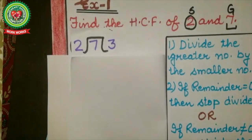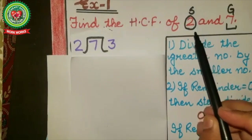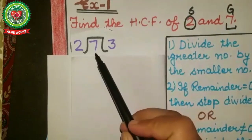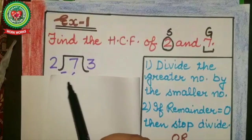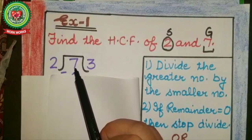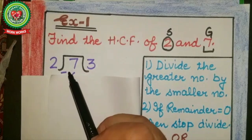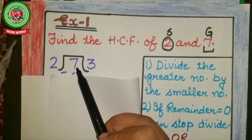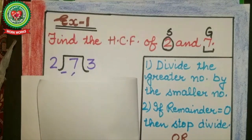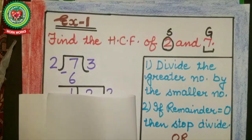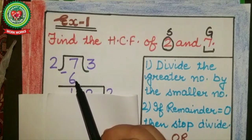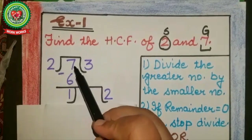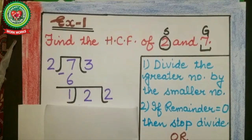So while doing division, the smaller number, that is 2, will become the divisor, and the greater number, that is 7, will become the dividend. We check: does 7 come on the 2 times table? It doesn't, so we take the number less than 7 that does come on the 2 table — that number is 6. Two 3s are 6. Then 7 minus 6 equals 1. Step number one done.